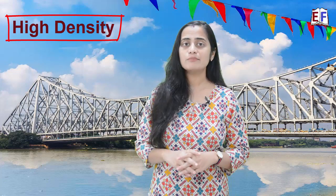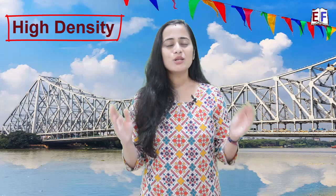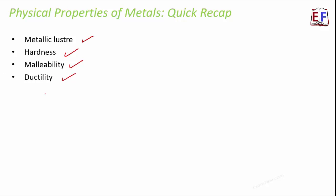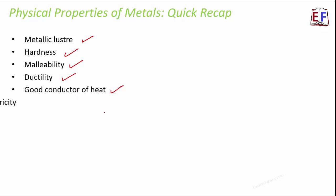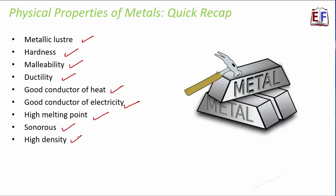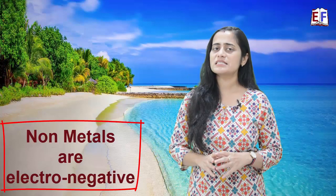Iridium and osmium are the metals with the highest densities, whereas lithium is the one with the lowest density. Let's do a quick recap of the physical properties of metals: metallic luster (metallic shine), hardness, malleability (can be beaten into thin sheets), ductility (can be drawn into thin wires), good conductor of heat, good conductor of electricity, high melting point, sonorous (produces a ringing sound when hit), and high density. All these physical properties together define a metal.